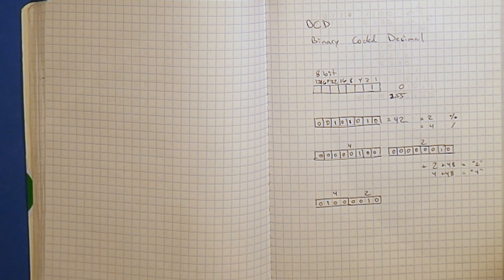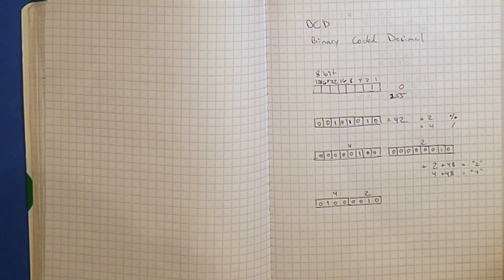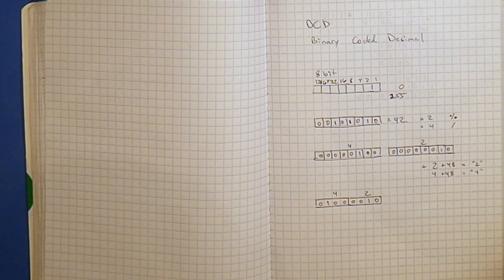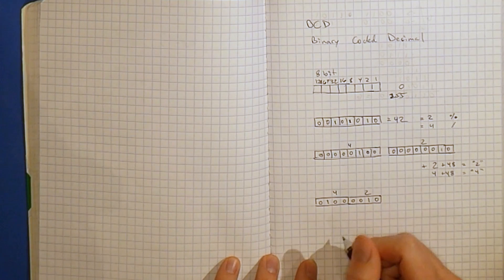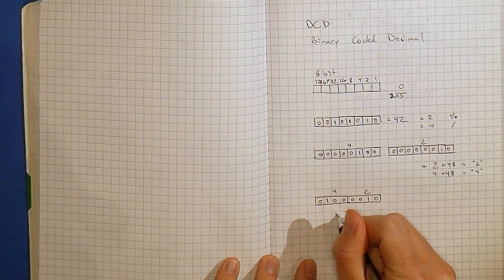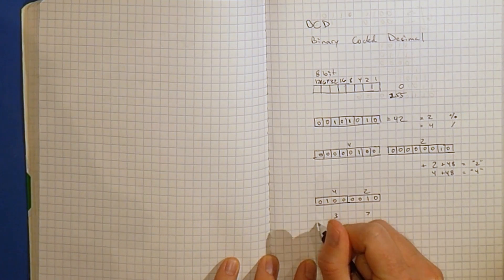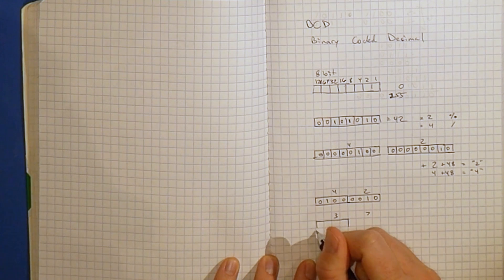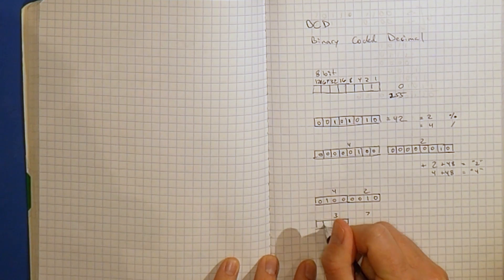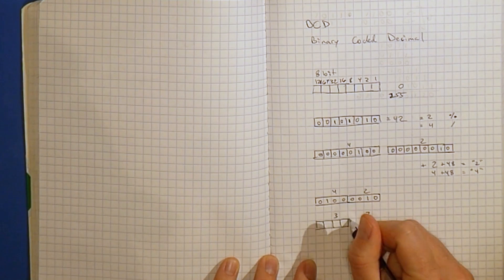The 6502 used packed BCD. Intel also, kind of, has support for BCD. And 6502, kind of, has support for BCD. We need to talk about why this works, kind of. But before we move on, if we were to add 37 to 42 in BCD, let's see what that looks like.